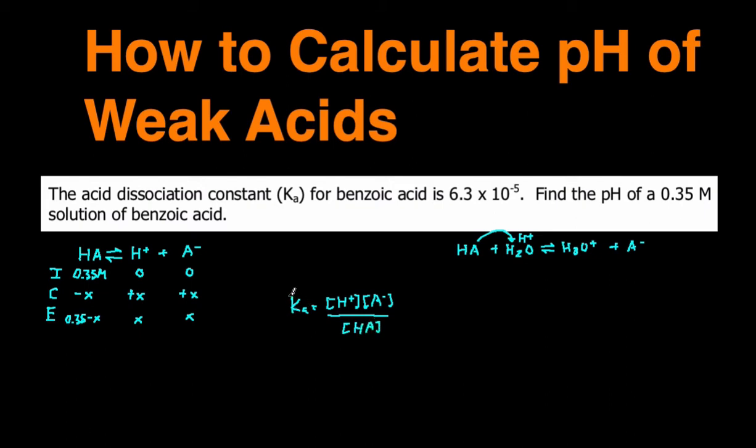We are given the Ka. To solve for the pH of a weak acid, you have to be given the Ka. Our Ka is 6.3 times 10 to the negative 5. Our concentration of H plus at equilibrium was X. The concentration of A minus at equilibrium is also X. And then the concentration of the reactants HA was 0.35 minus X.